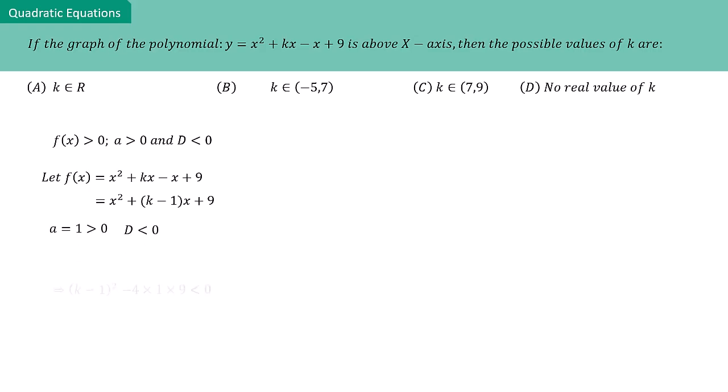The discriminant D is given by (k - 1)² - 4 × 1 × 9 < 0. Simplifying this inequality, we get (k - 1)² - 36 < 0.